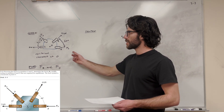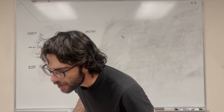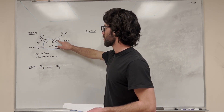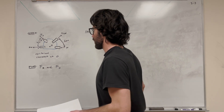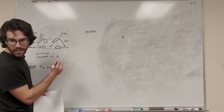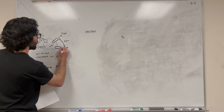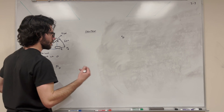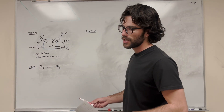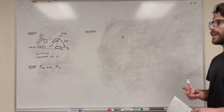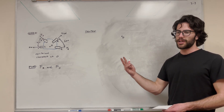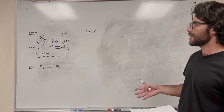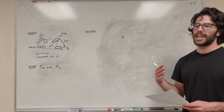We're looking for force A — actually I drew it backwards. This is B. Let me change that really quick. But we're looking for these two unknown forces. So we have two unknowns: this is force B and this is force A. We're looking for force B and force A.